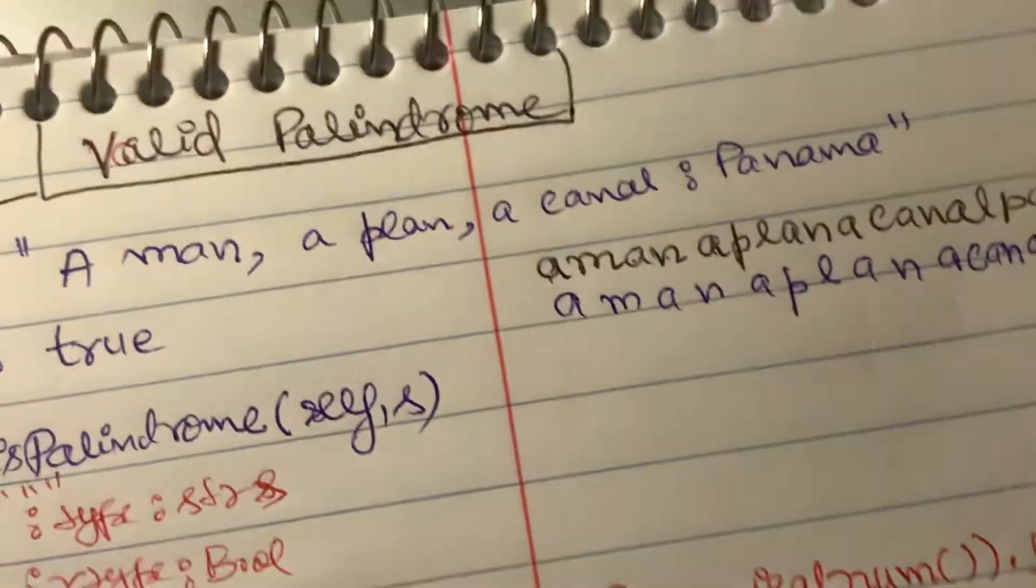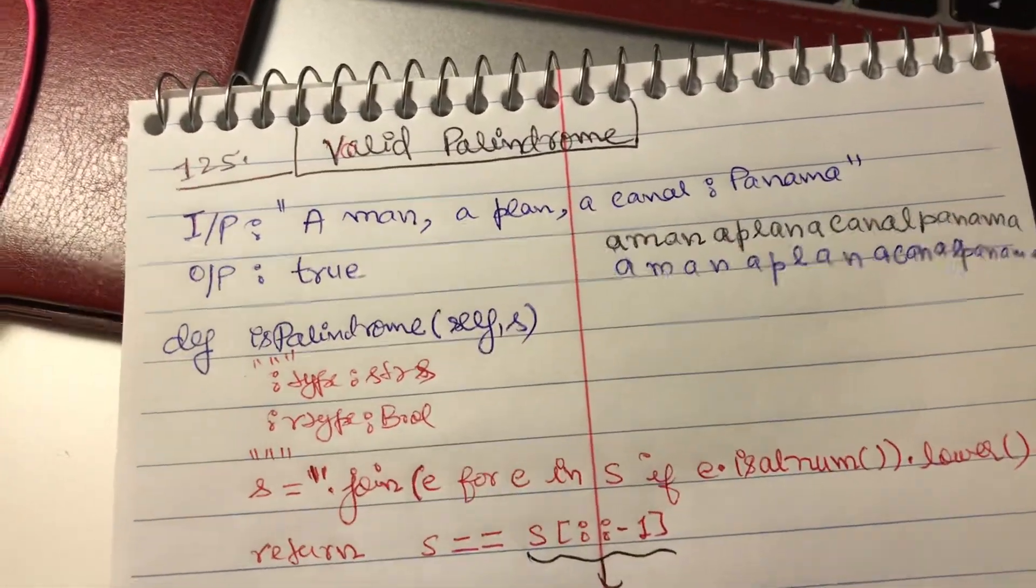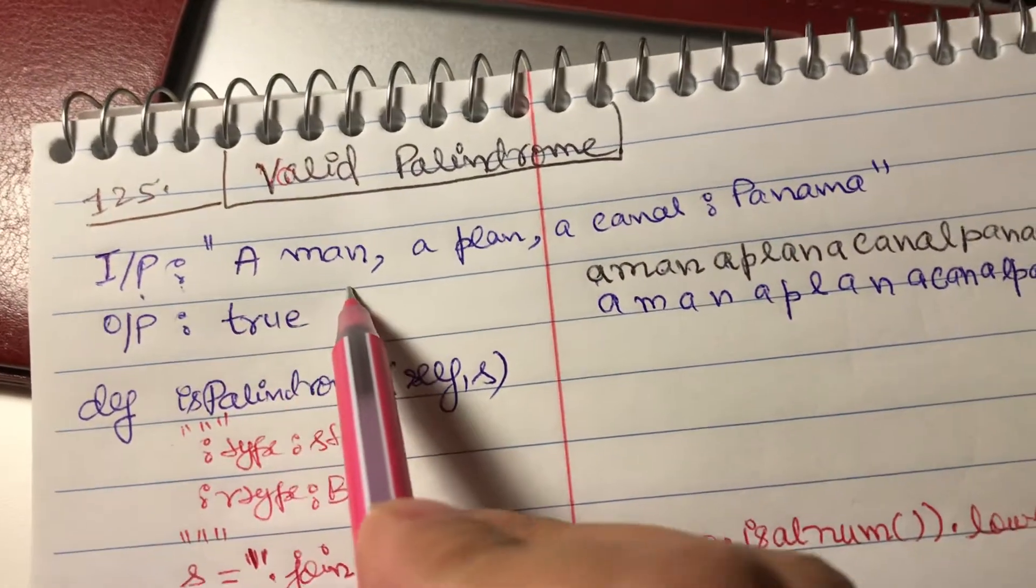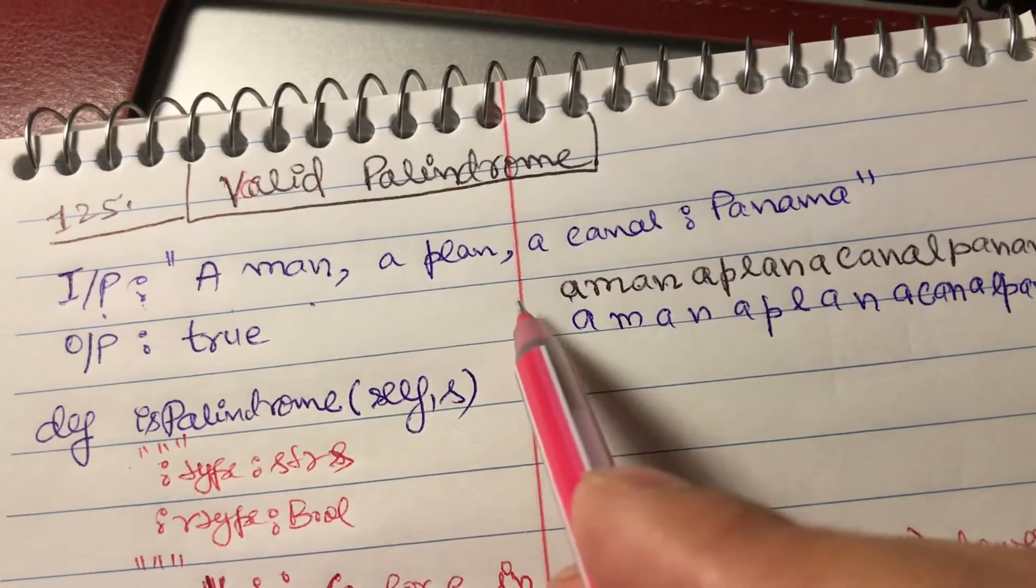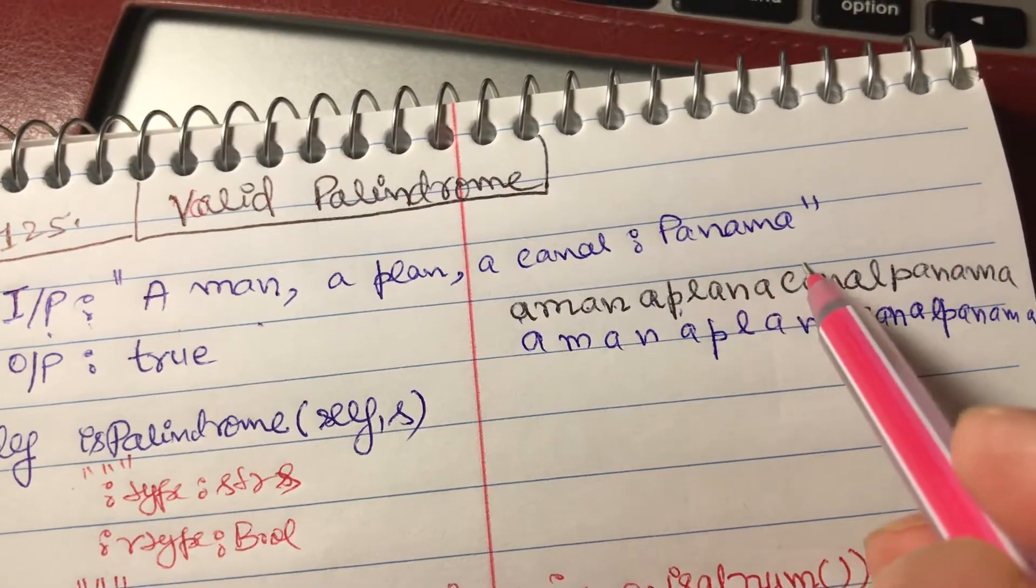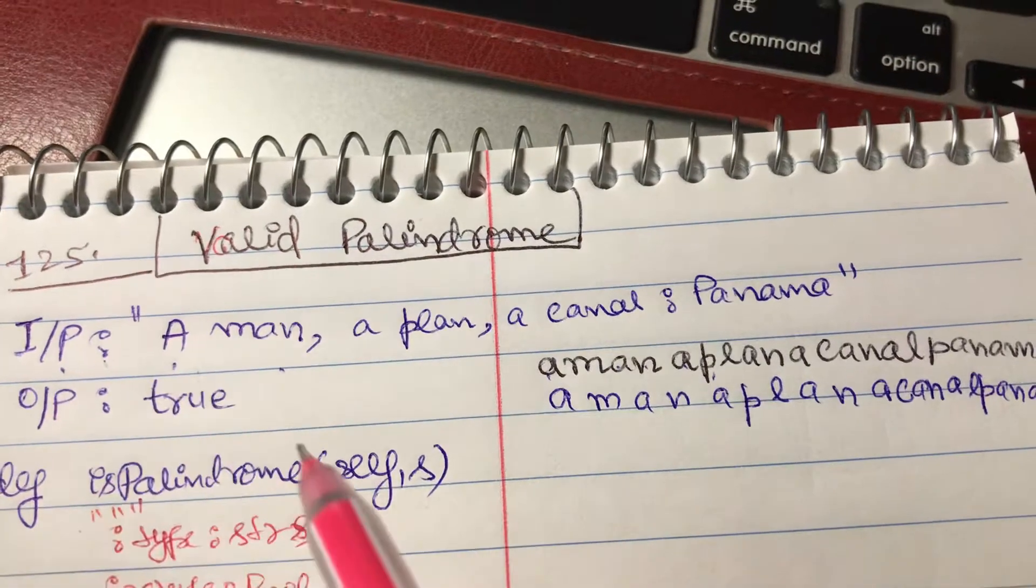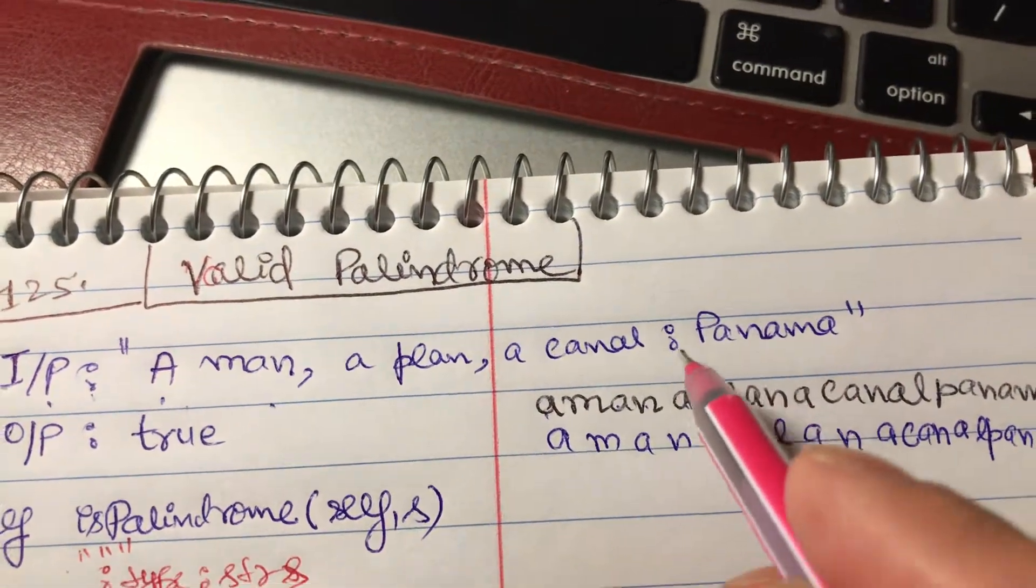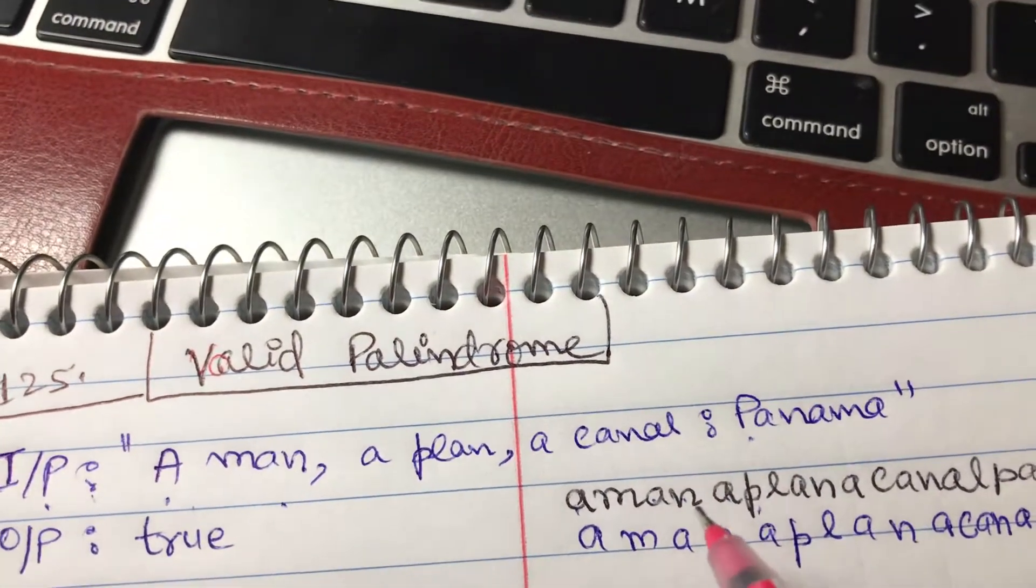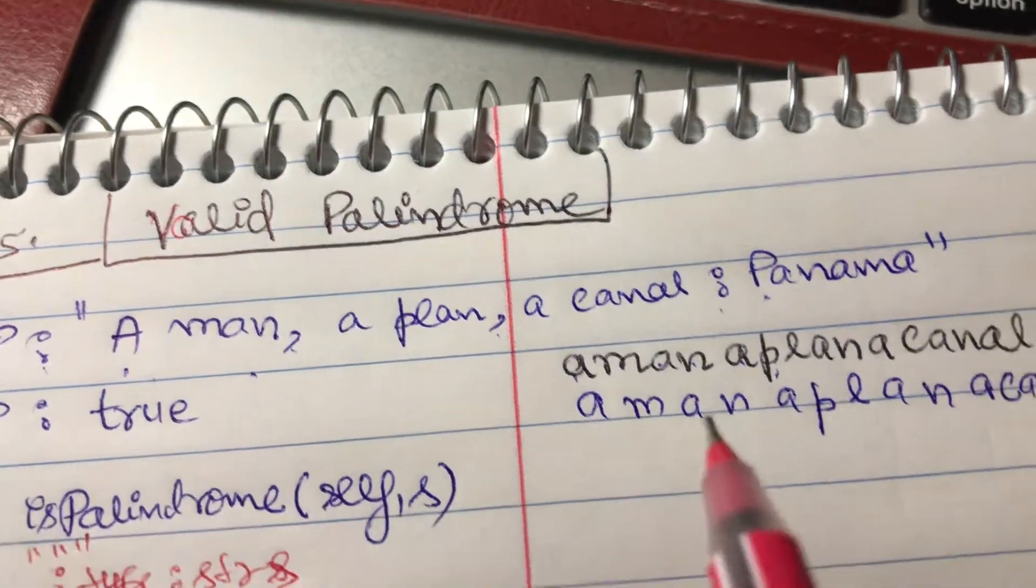Let's have an input example. For example, input is 'A man' with a capital A, comma, 'a plan', comma, 'a canal' colon 'Panama'. We see that there are capital characters A and P, and we see there are some non-alphanumeric characters like colon and comma, so we don't have to consider them.